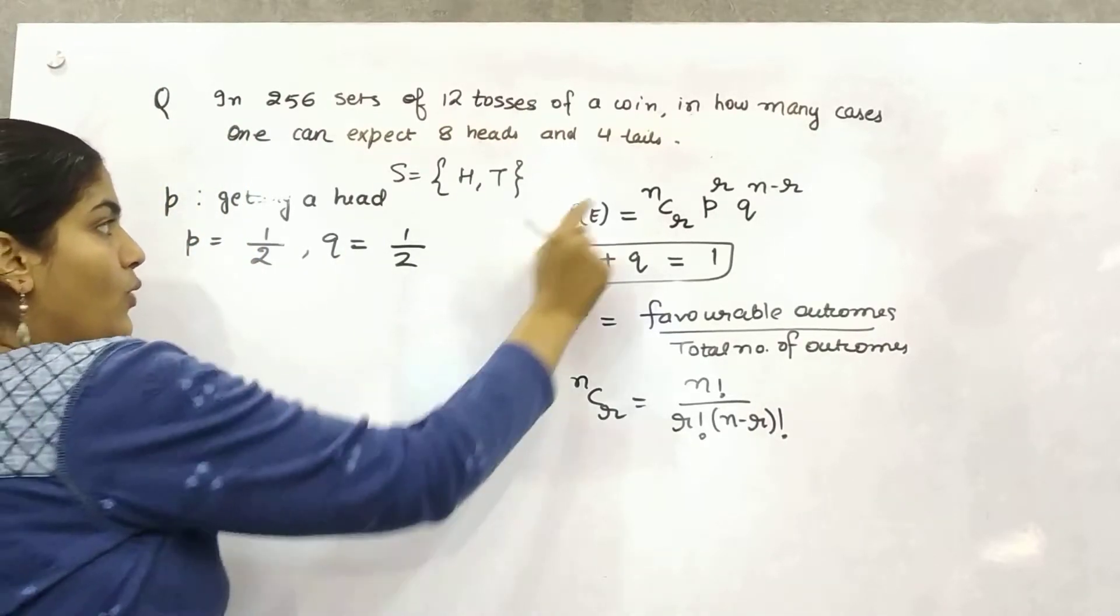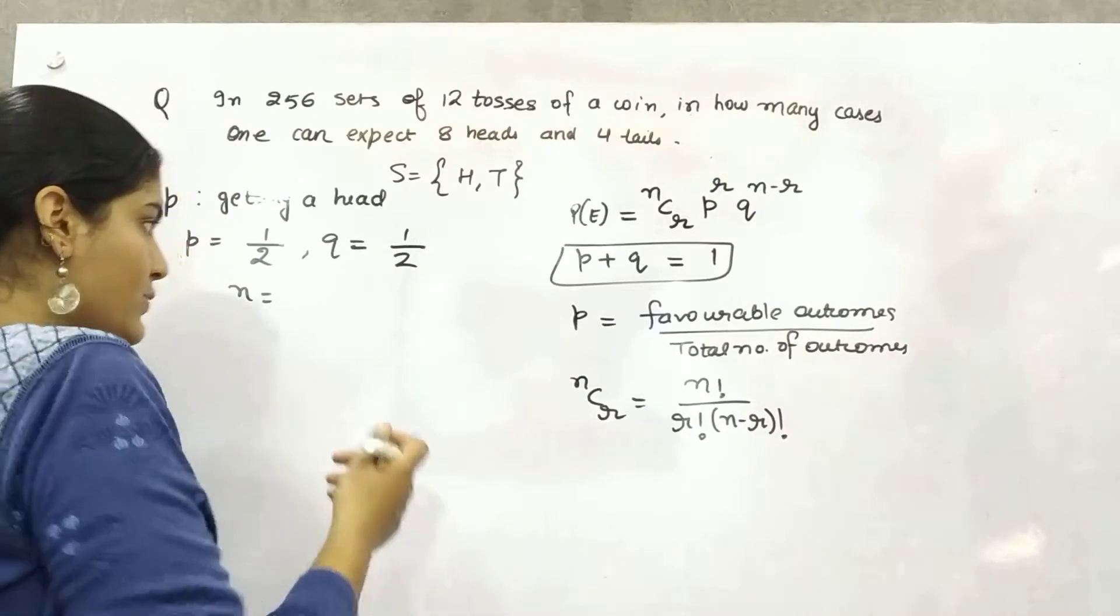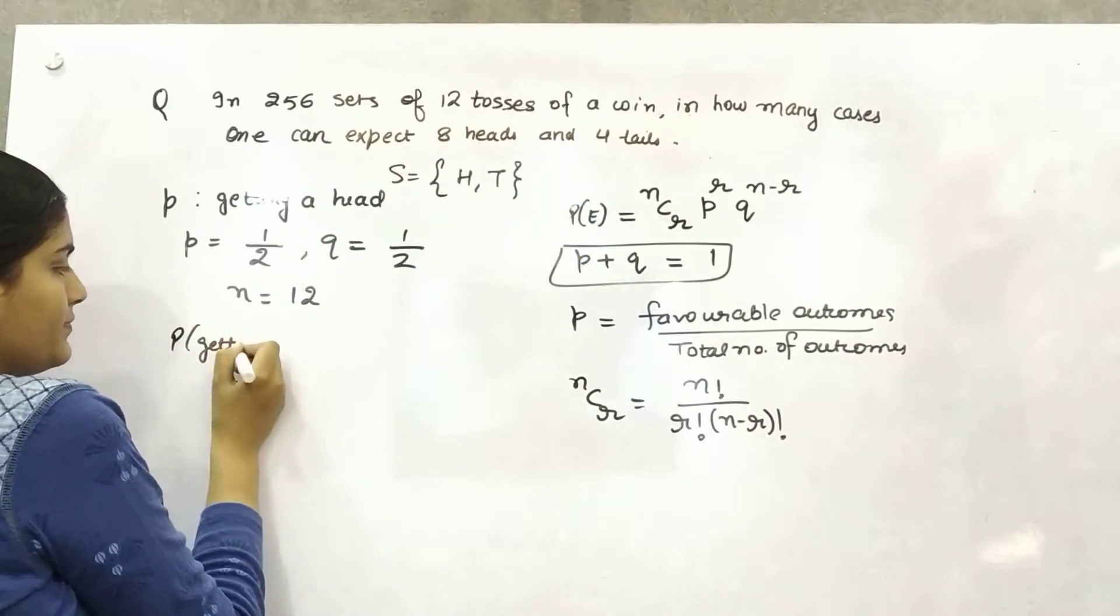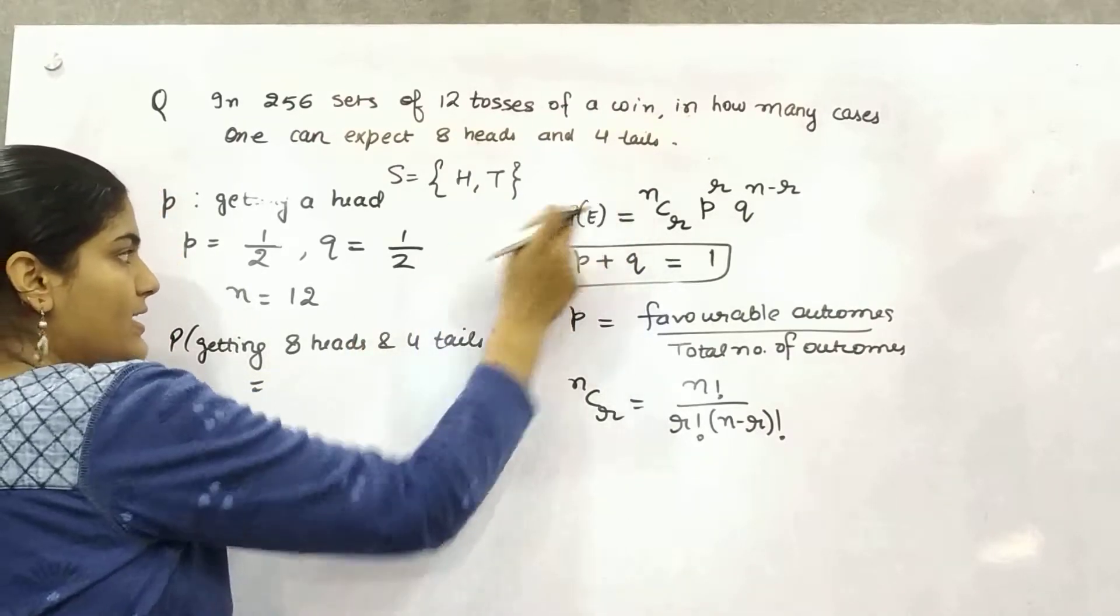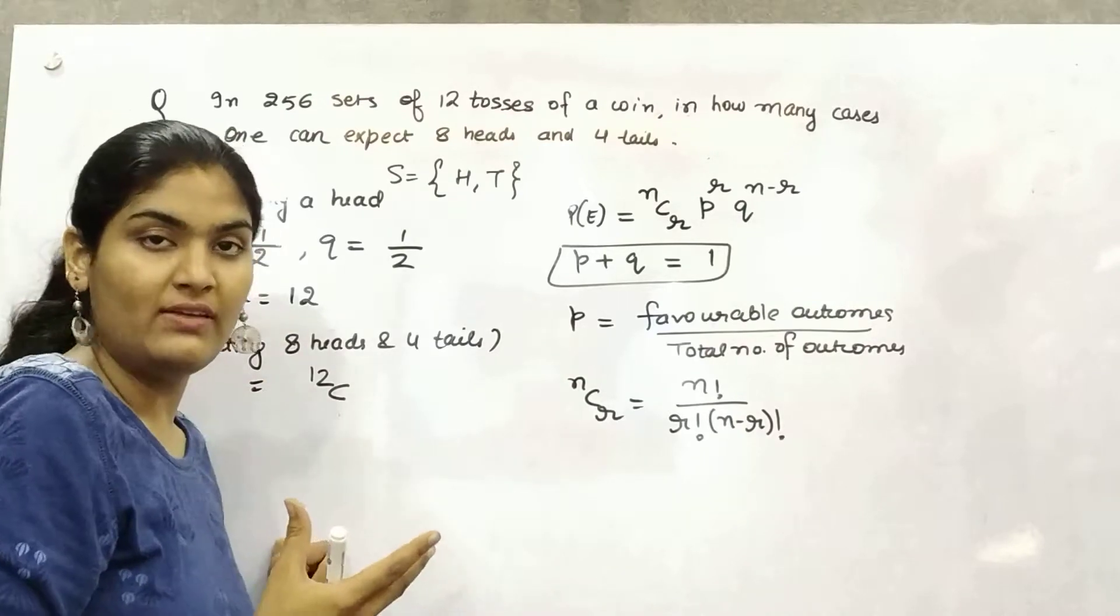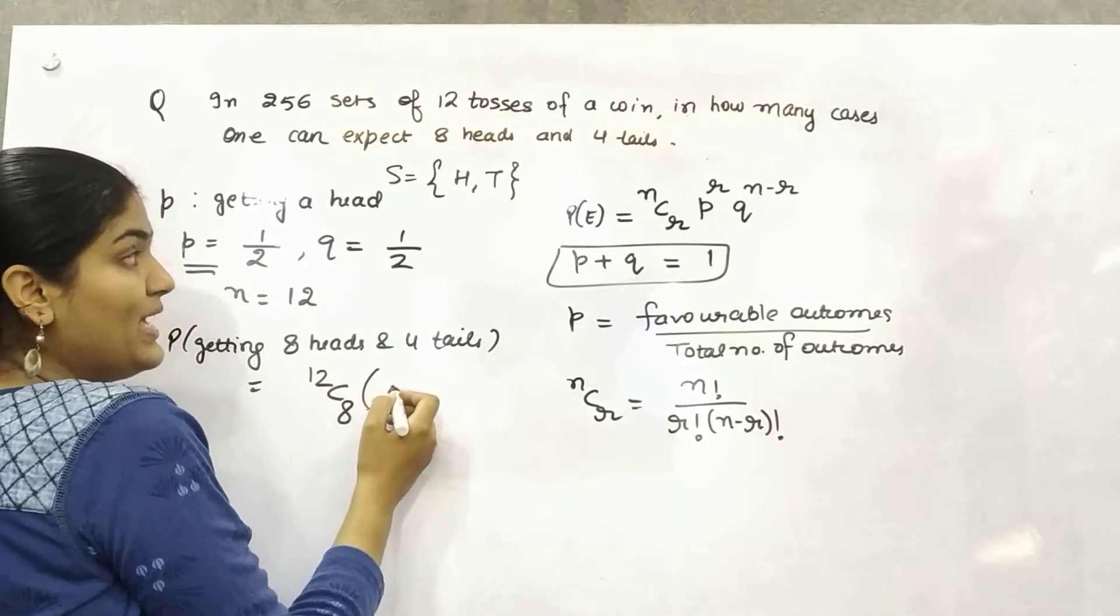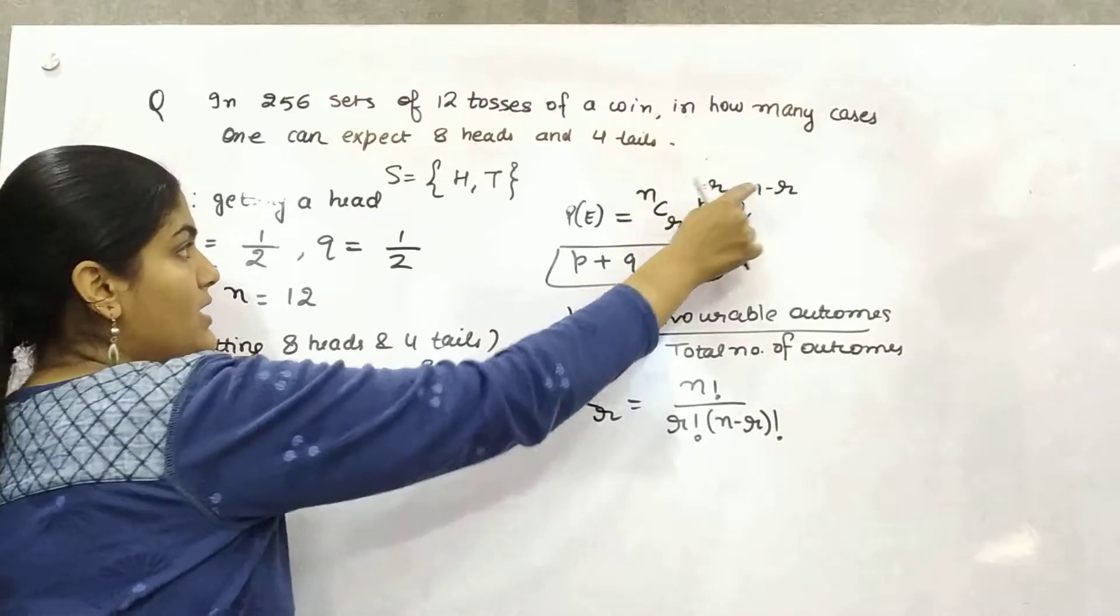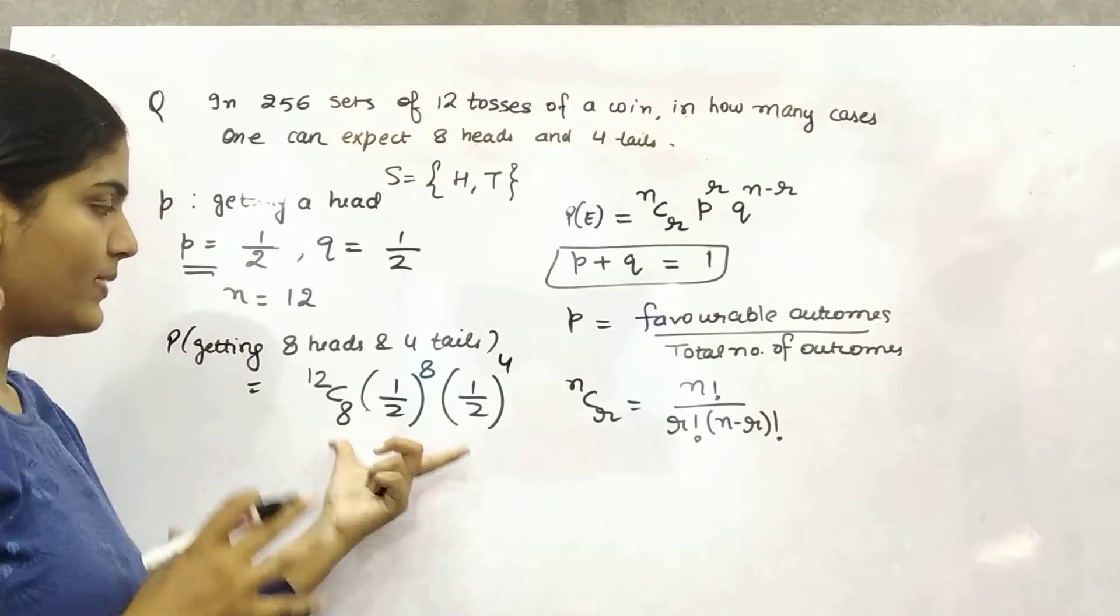Now you have P and Q. What is N then? N is total number of tosses. Total number of repetitive events you are doing, so 12. Now you want to find out 8 heads and 4 tails. So probability of getting 8 heads and 4 tails will be, apply this formula. N is 12. R is, if you are taking getting a head as your successful event, so your R is 8. P is 1 by 2 to power 8. And Q is 1 by 2. 12 minus 8 is 4.